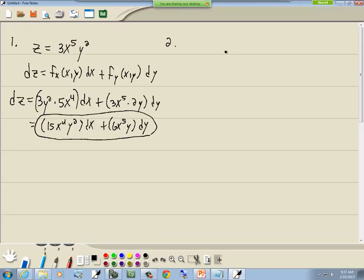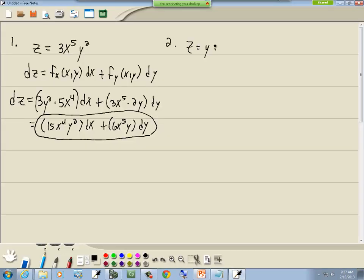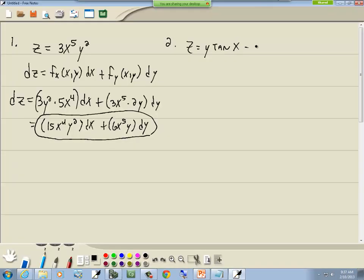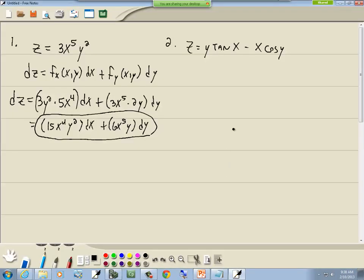Let's take a look at this one. z equals y tangent x minus x cosine y. I want to find the total differential, so same formula. I'll write down my formula.